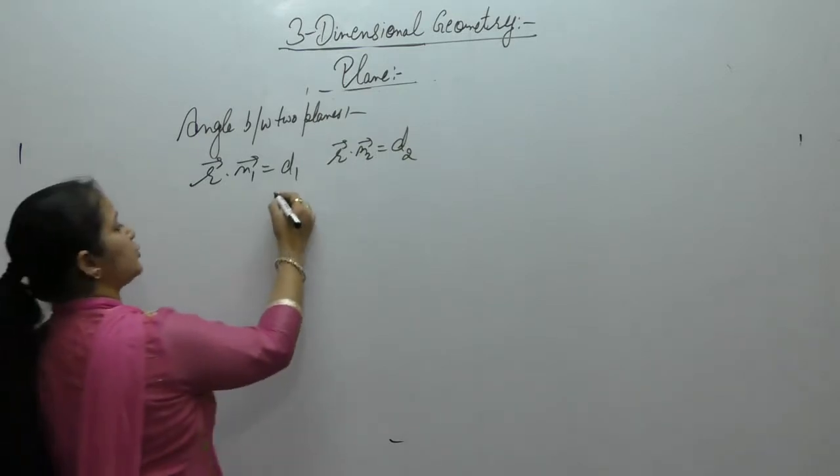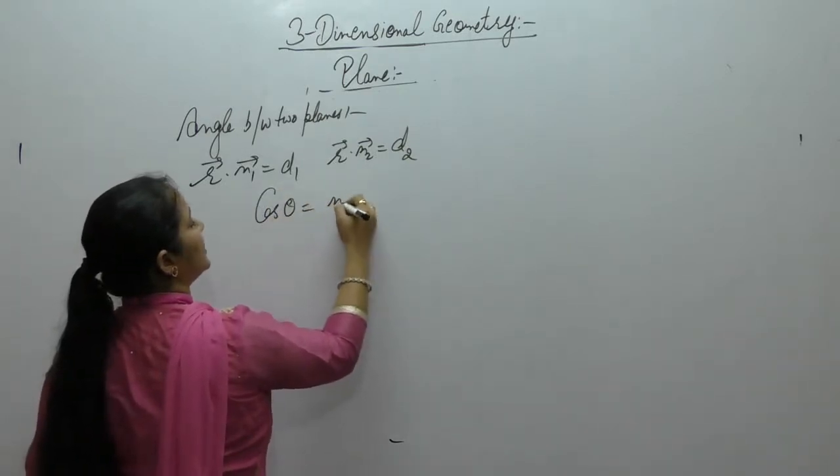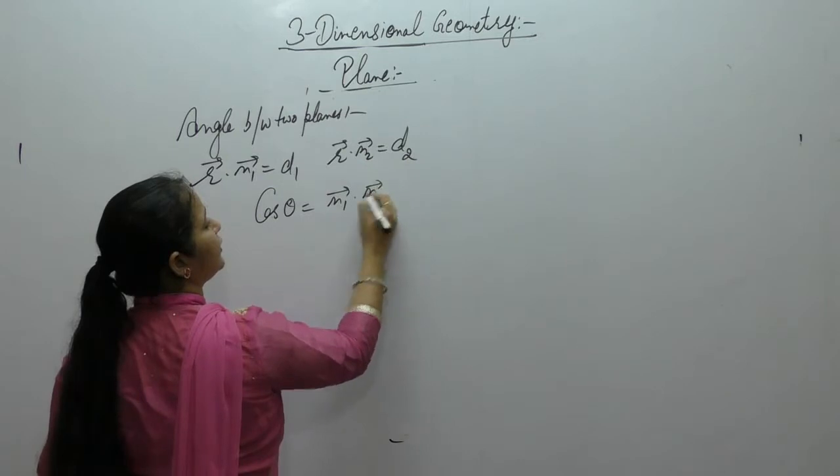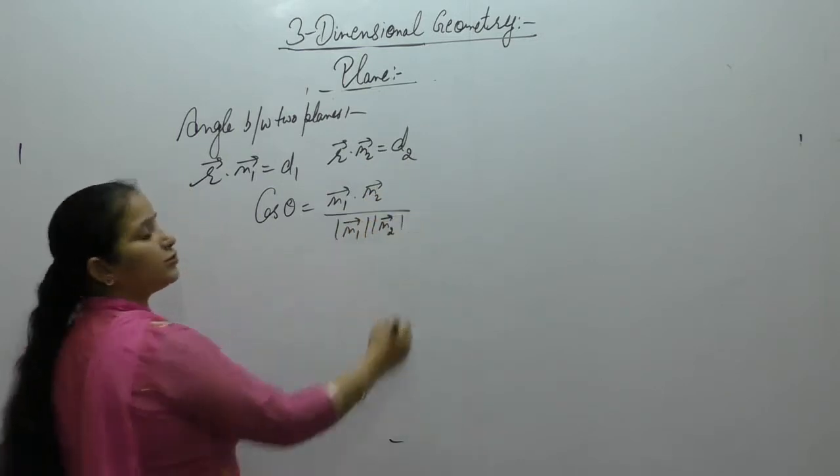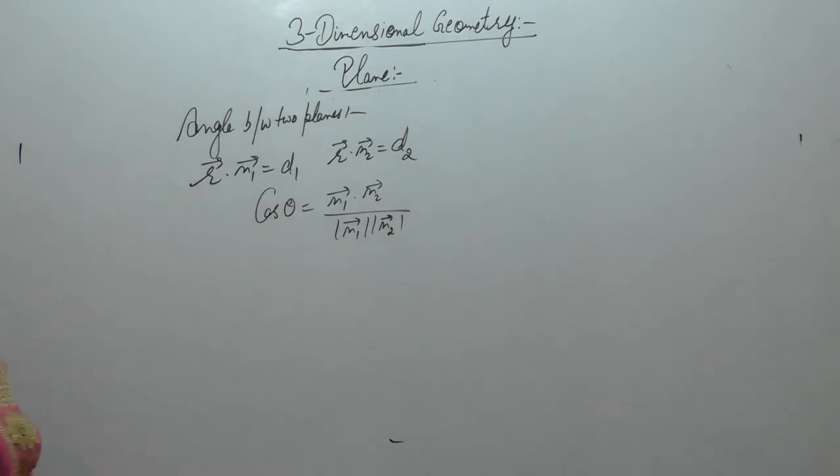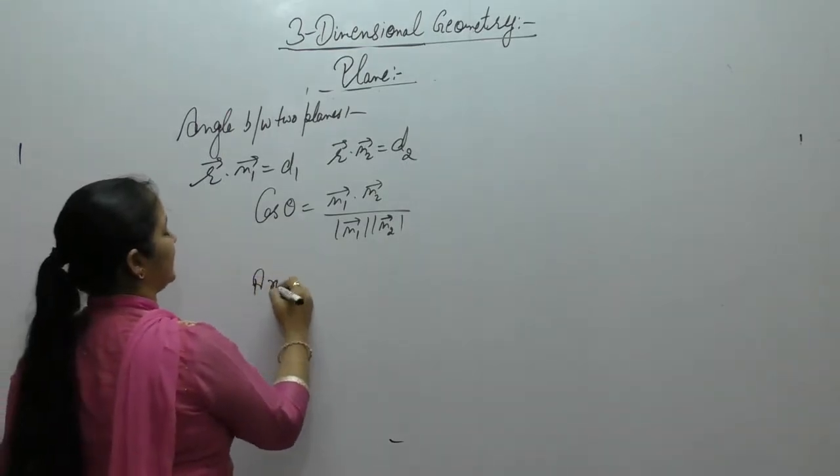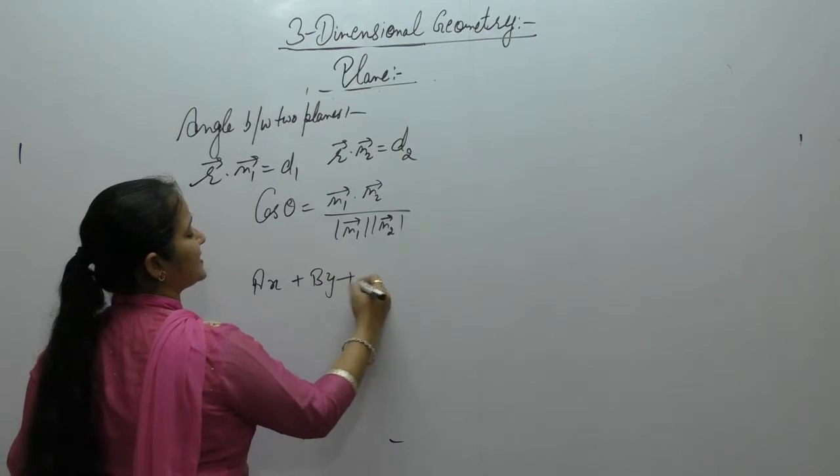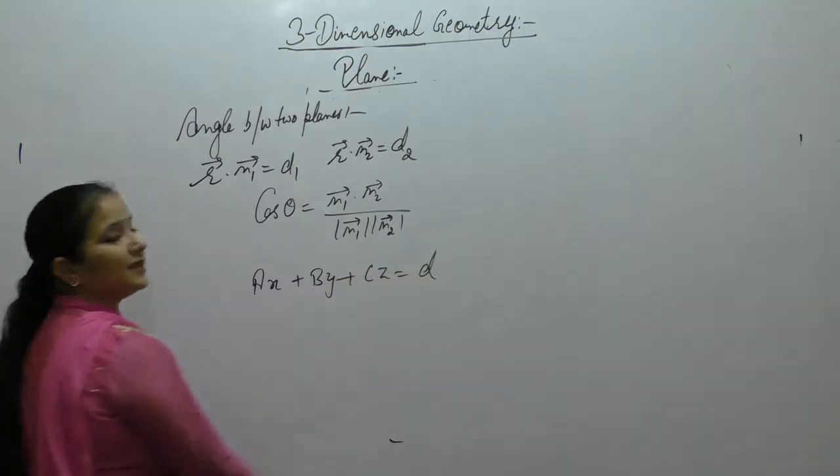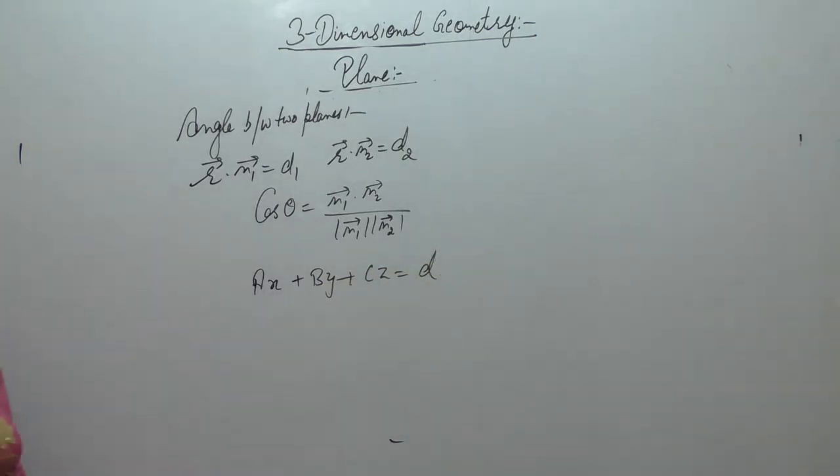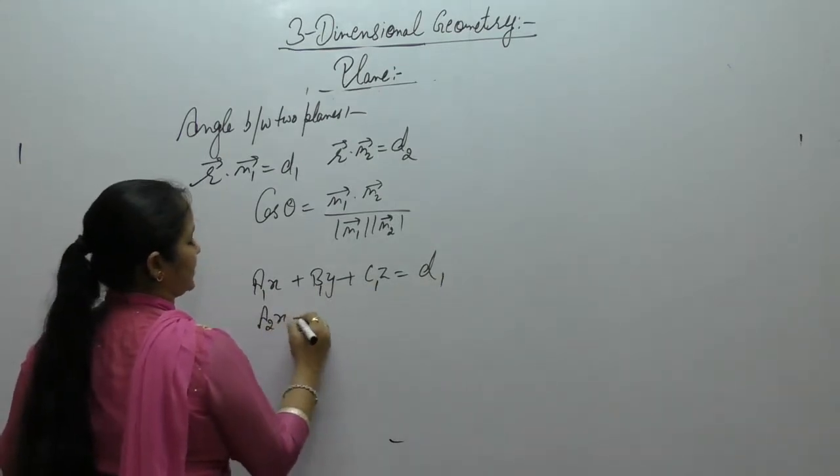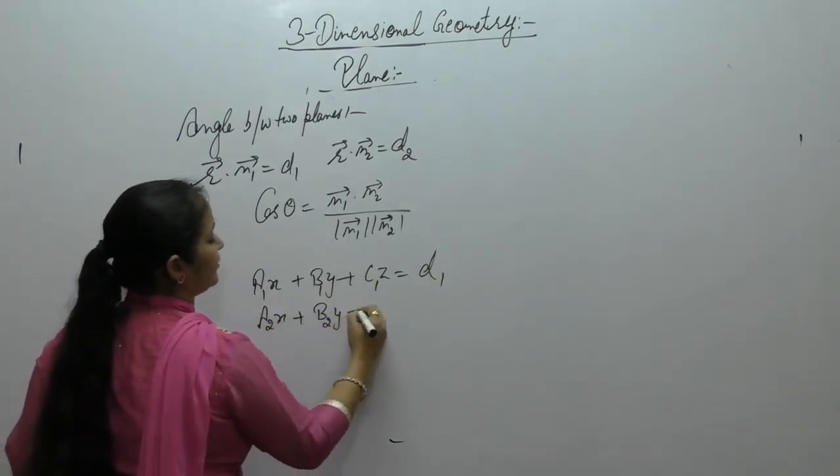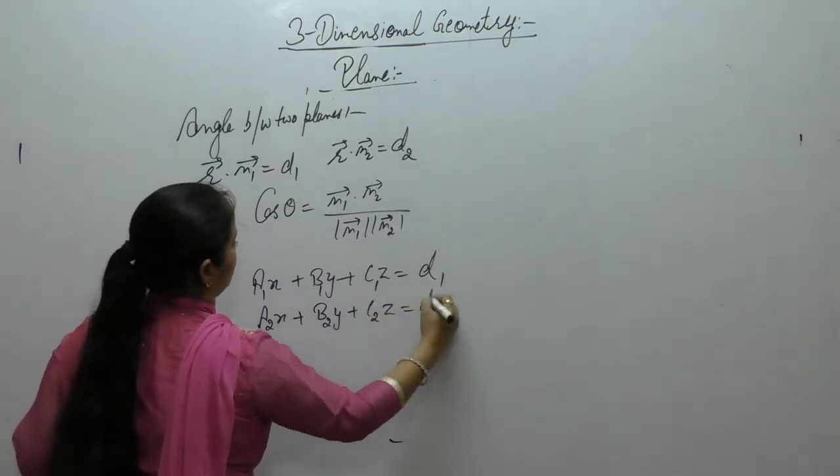Then angle between these two planes will be equal to n1 vector dot n2 vector upon magnitude of n1, magnitude of n2. And if we have Cartesian form equation, ax plus by plus cz equals to d, general equation of plane.